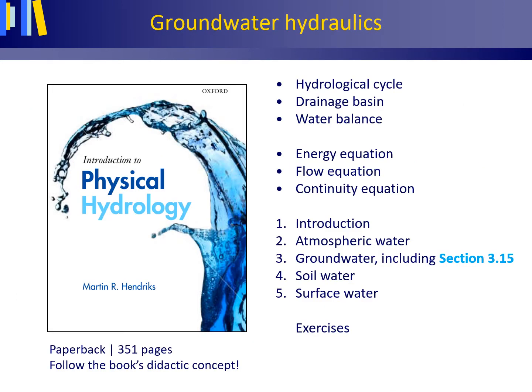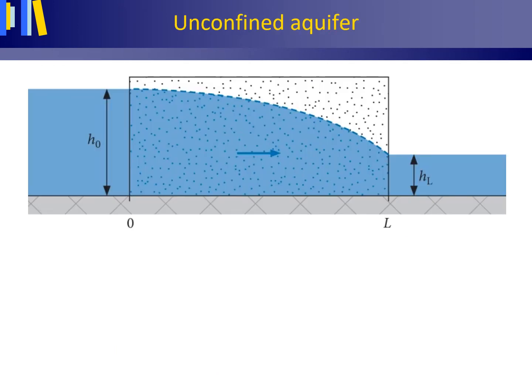We will continue with groundwater, section 3.15 on groundwater hydraulics. Steady, unconfined groundwater flow between two fully penetrating canals, as shown here. The aquifer is regarded as homogeneous and isotropic. Let's see what we can already figure out simply by reasoning.